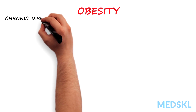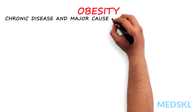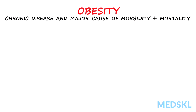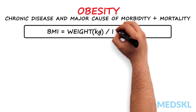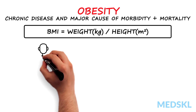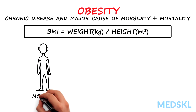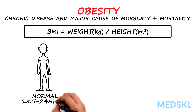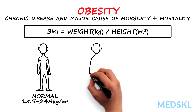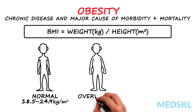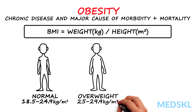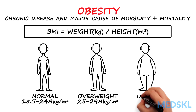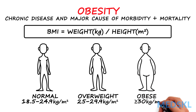Obesity is a chronic disease that is increasing in prevalence and is a major cause of morbidity and mortality. Obesity is defined with the help of the body mass index, or BMI, calculated as weight in kilograms divided by height in meters squared. Normal BMI is between 18.5 and 24.9 kg/m². Overweight is defined as a BMI between 25 and 29.9 kg/m², while a BMI of 30 kg/m² and above is considered obese.